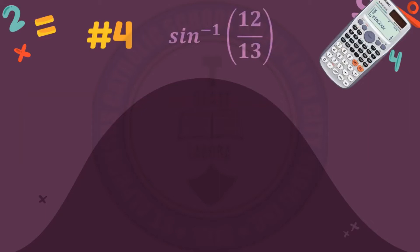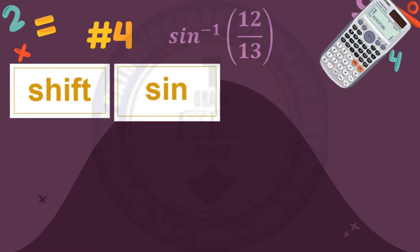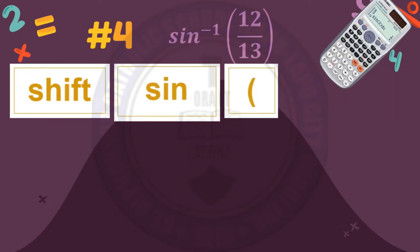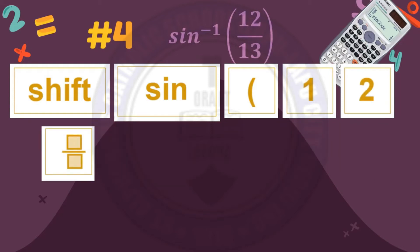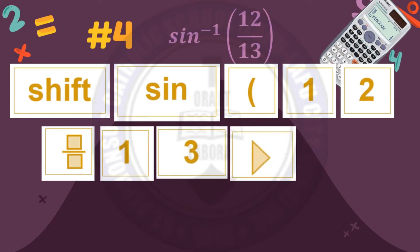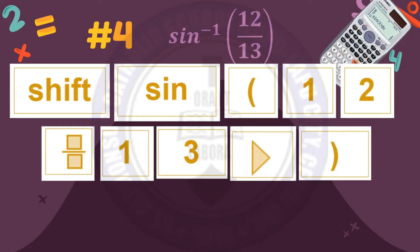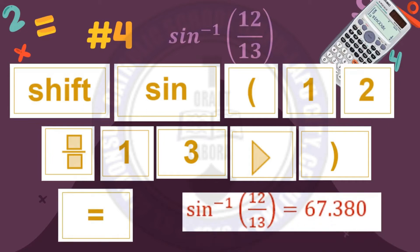Number 4: arc sine of 12 over 13. Click shift, then sine, then open parenthesis, then enter 12 over 13 using the fractional sign, then the right arrow, then close parenthesis, then equal sign. With that, arc sine of 12 over 13 is equal to 67.380.